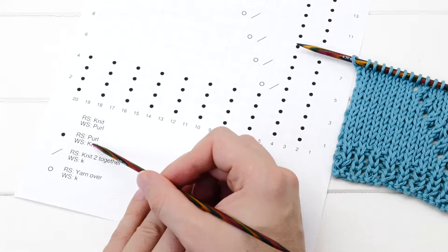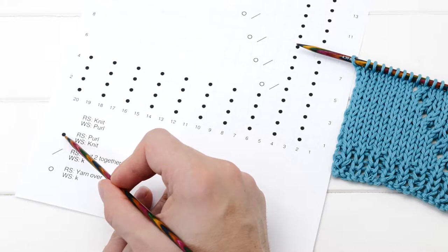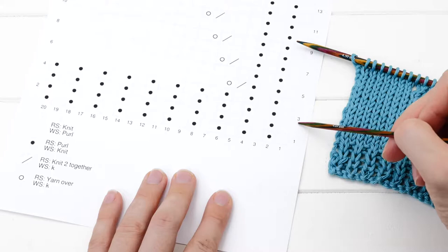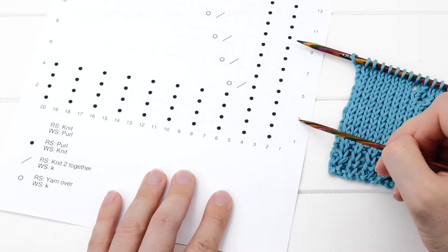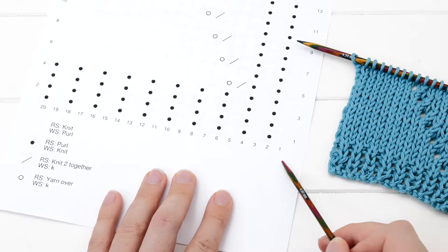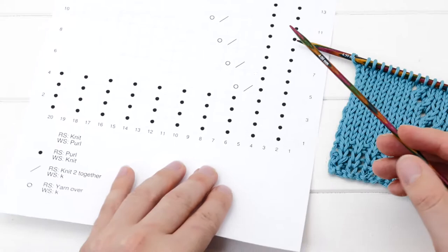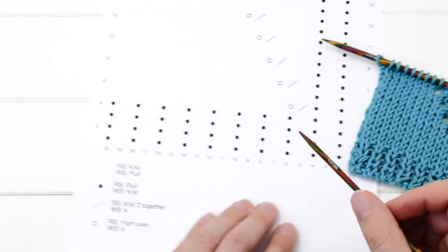So here we have a purl. And then you have numbers. First, you have numbers usually going towards the top. And these numbers count the rows. So this is the first row and then the second, the third, the fourth, the fifth row and so on. And then you have numbers here at the bottom and usually at the top as well. And these numbers count the stitches. One, two, three, in total 20 stitches.